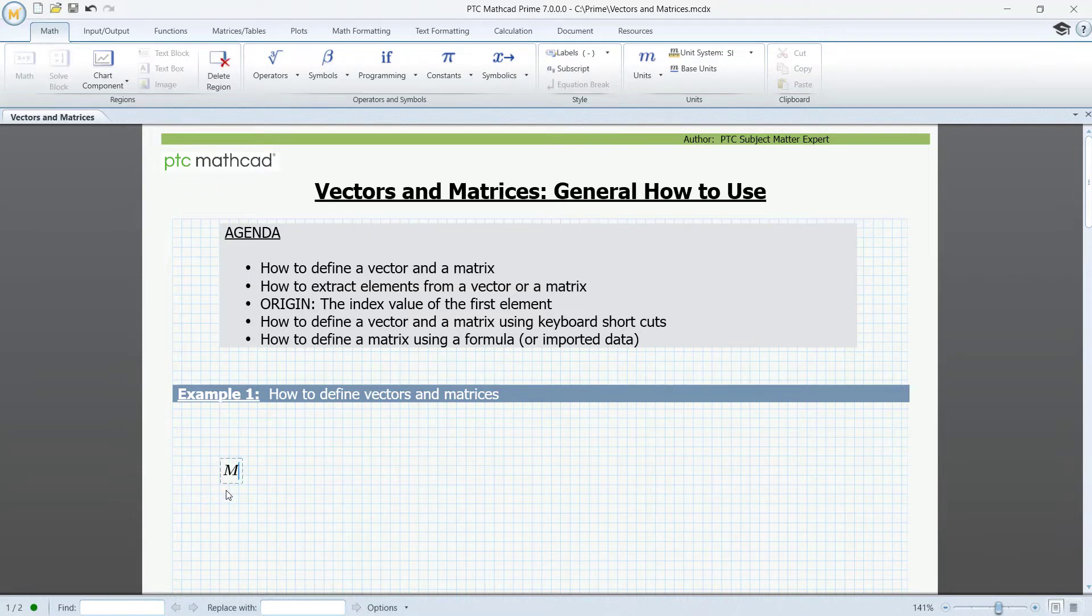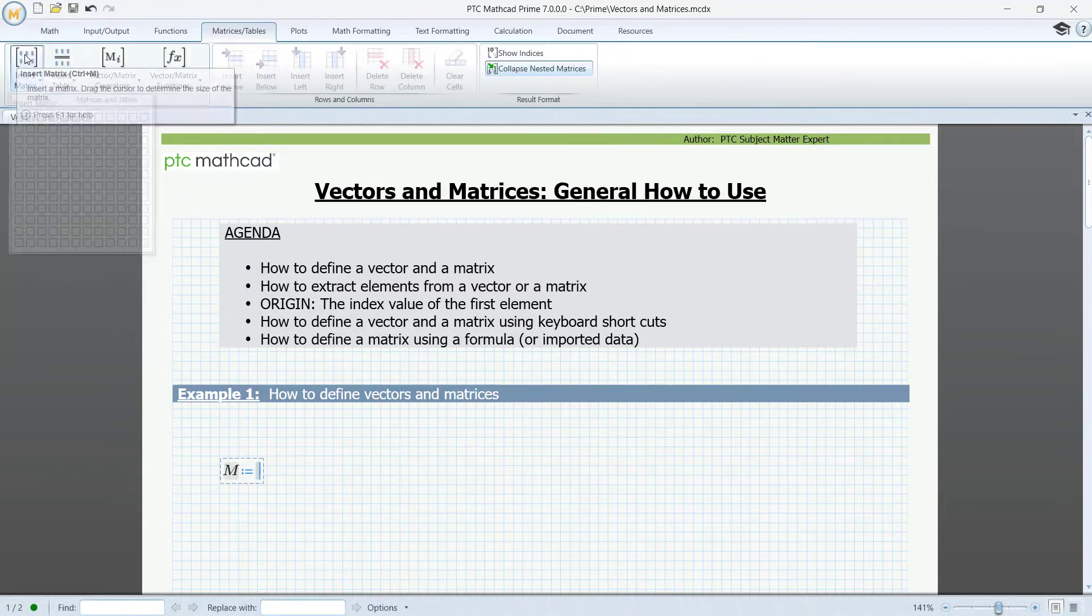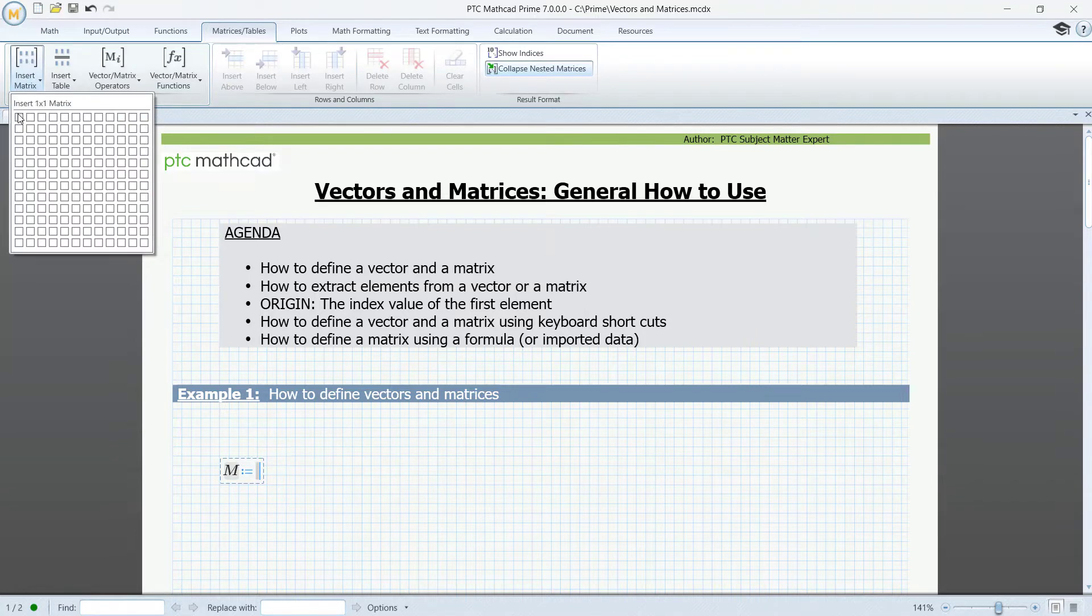Let's call it M. Go to Matrices, Tables, Ribbon, and select Insert Matrix. And with the pointer, drag a 4x3 matrix.